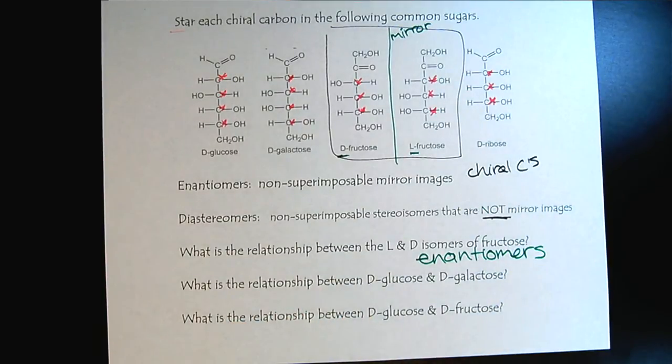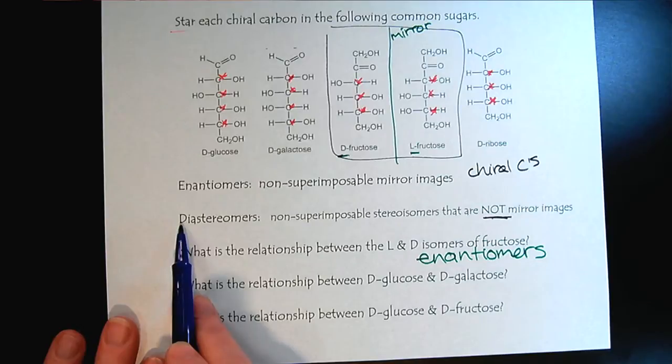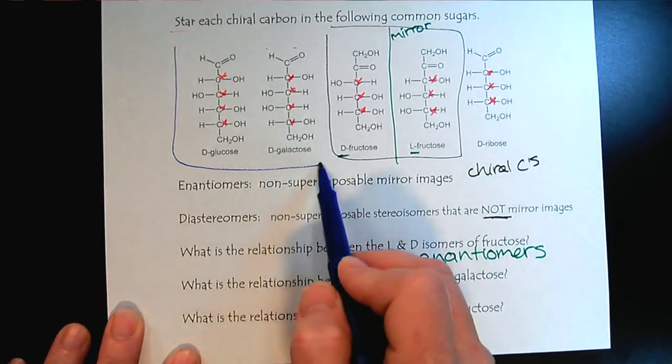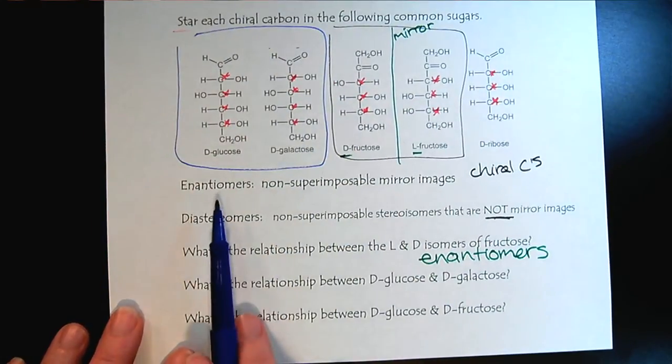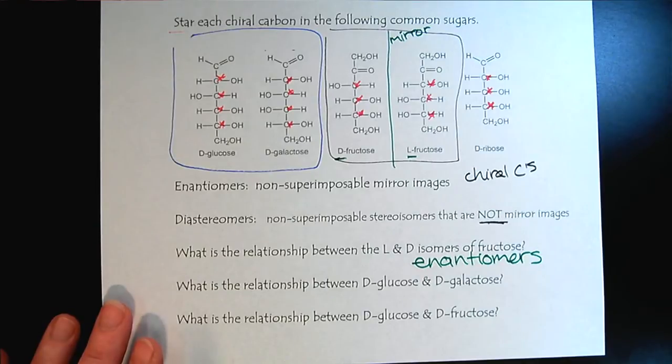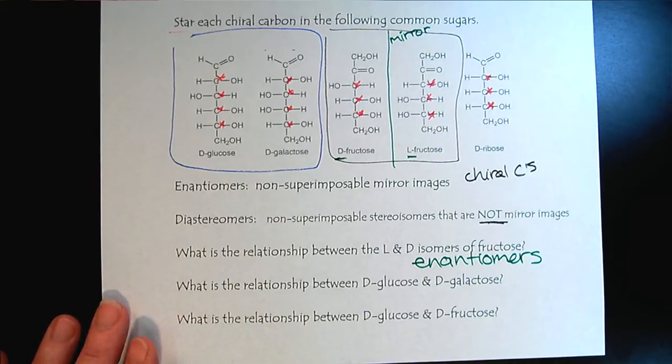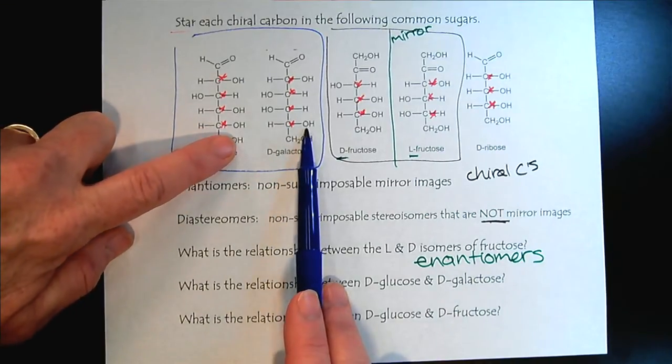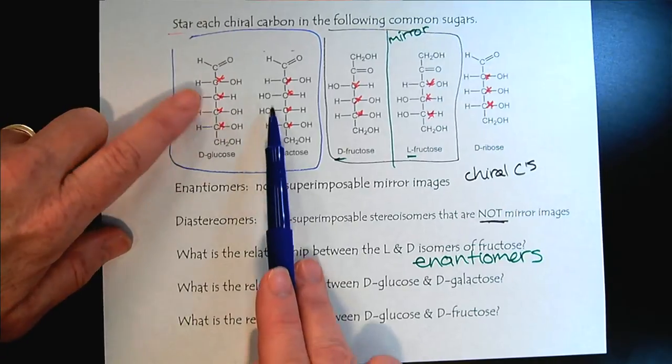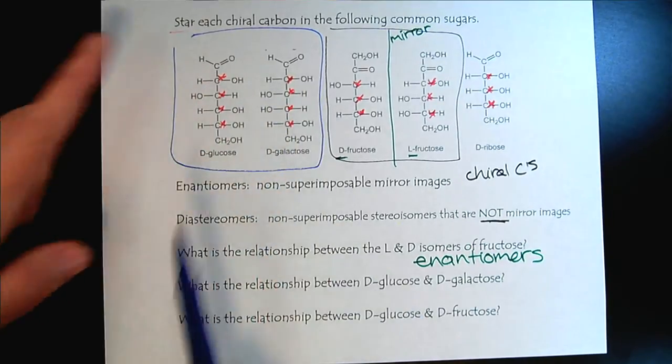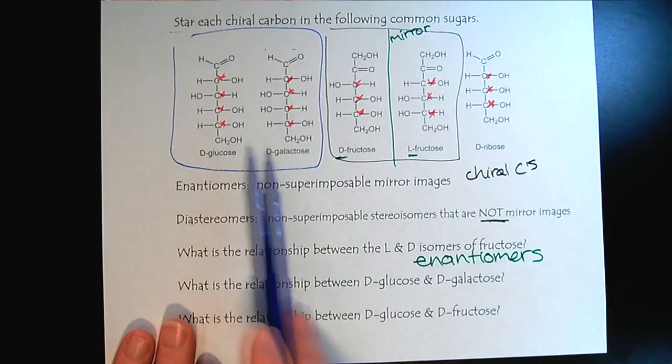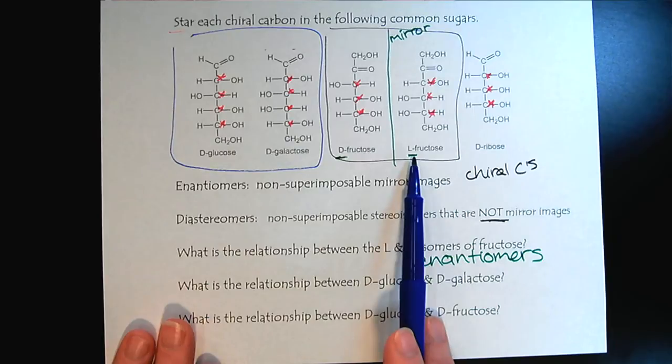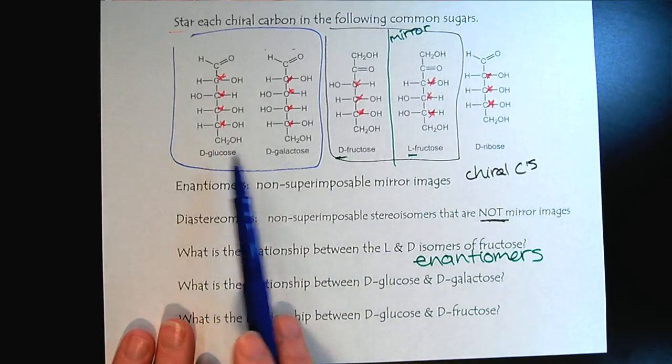So now we'll look at an example of the term diastereomer. Now let's compare glucose to galactose. And remembering that the terms enantiomer and diastereomer have to do with chiral carbons, so we're just looking at the chiral carbons. So now when we look at glucose and galactose, we see, wait a minute, these two are the same. Mirror, same, same. So they're not identical, and they're not the full mirror image, like we saw here with fructose.